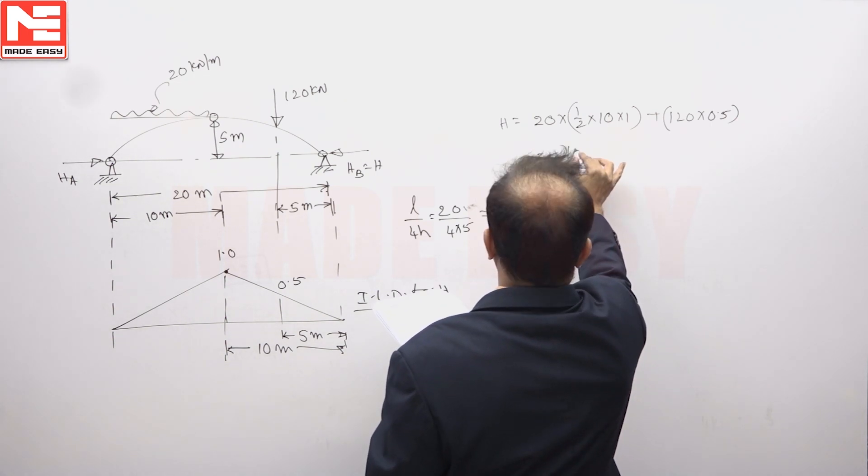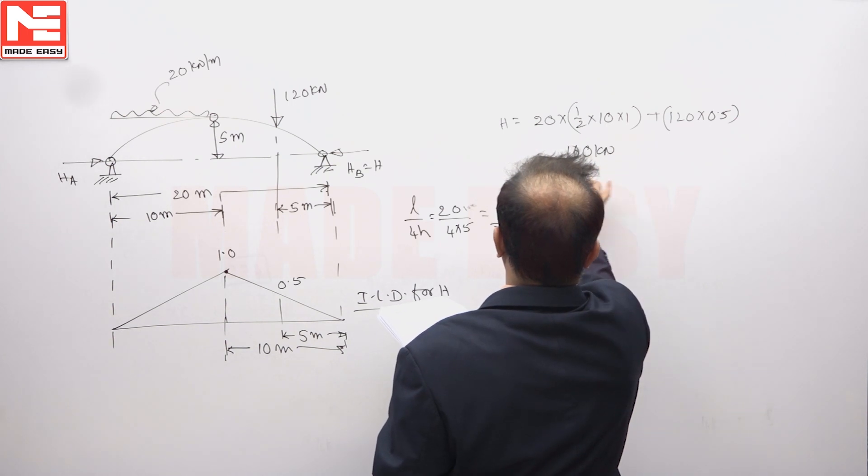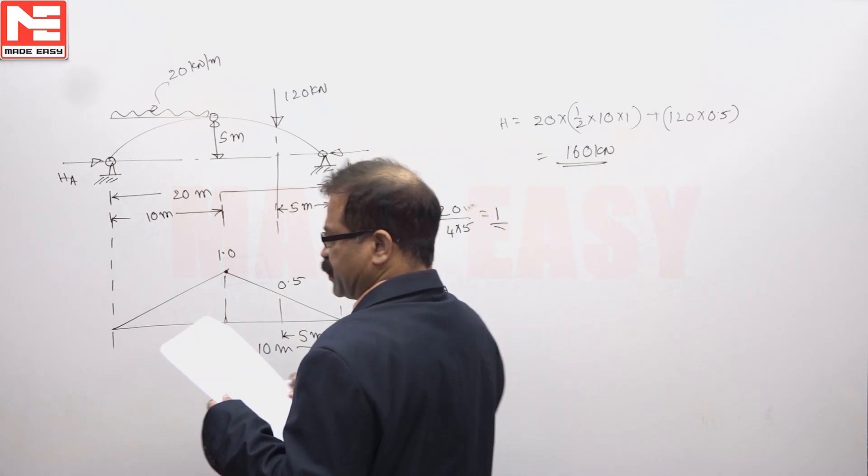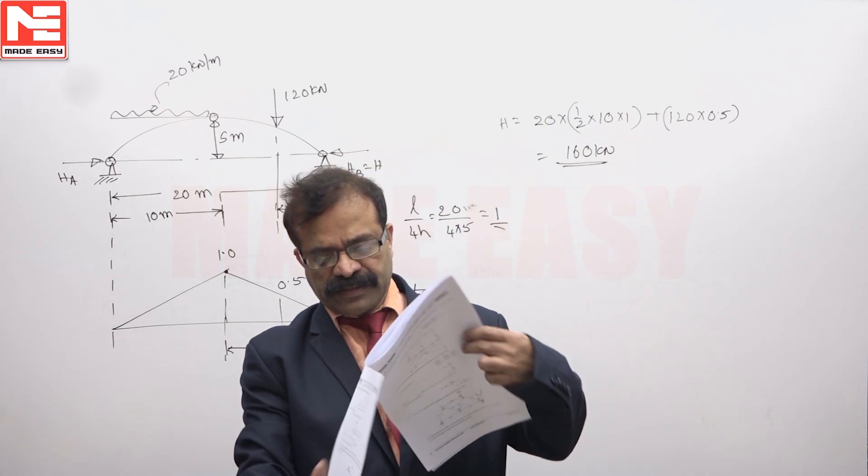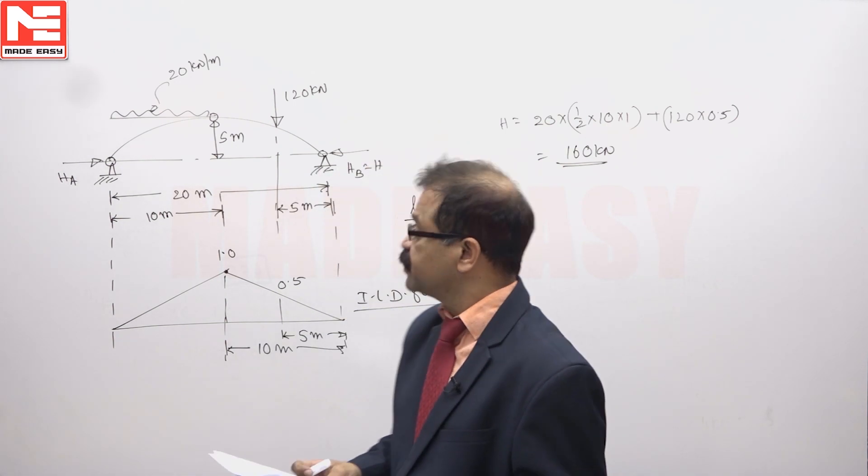160. Using the influence line diagrams, we can find the horizontal thrust first quickly, 160 kilo Newton.